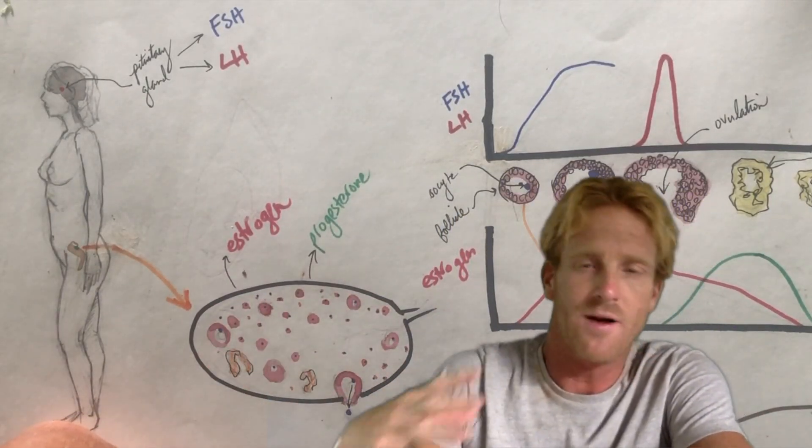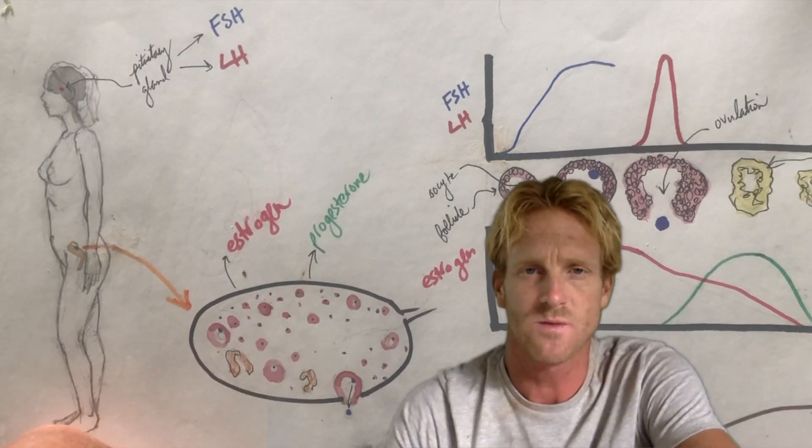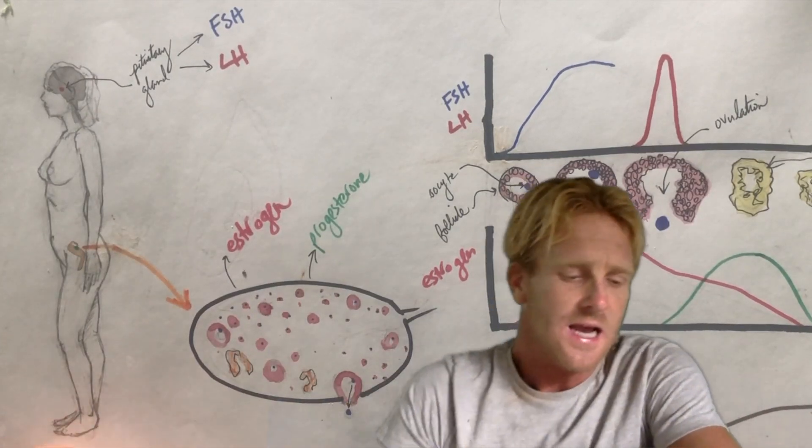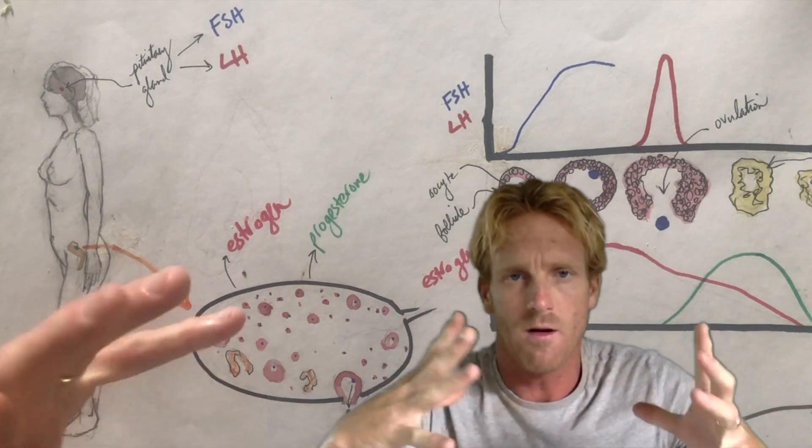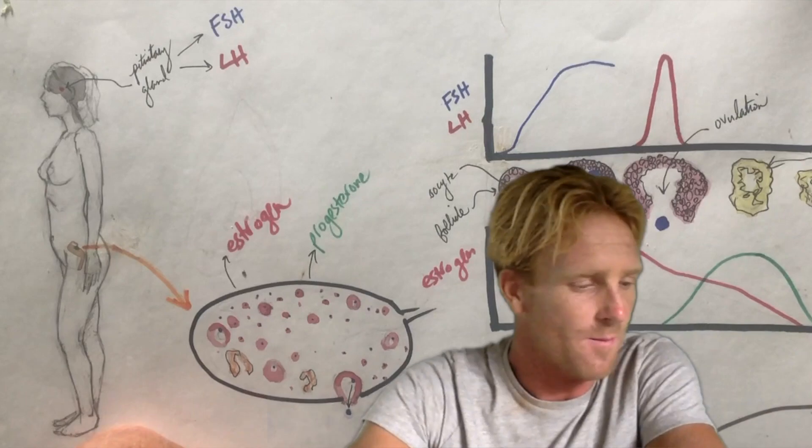Each egg in blue is going to be surrounded and supported by a series of cells which make up the ovarian follicles. Each follicle, in order for an egg to be released during ovulation, the follicle needs to grow, develop, and enlarge in order to release it for that particular month.